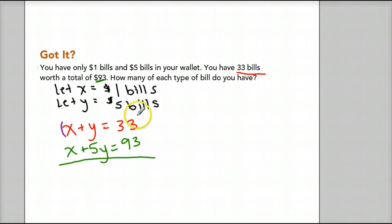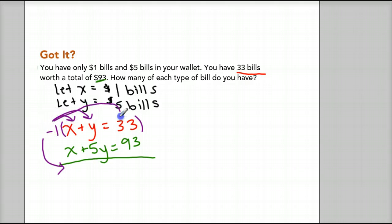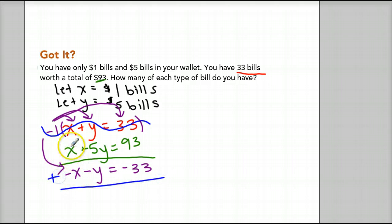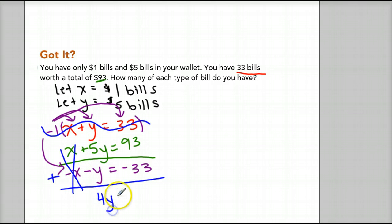We need to pick one of these equations, multiply it by negative 1, and solve for X and Y. I'm going to pick the top one to multiply by negative 1. Distributing, we get negative X minus Y equals negative 33. Now we have addition method. I crossed the original out lightly, and I add the two equations together. X plus negative X gives me 0 — that's eliminated. 5Y plus negative Y gives me 4Y, and that equals 93 plus negative 33, which gives me 60. To solve for Y, I divide both sides by 4 and get Y equals 15.